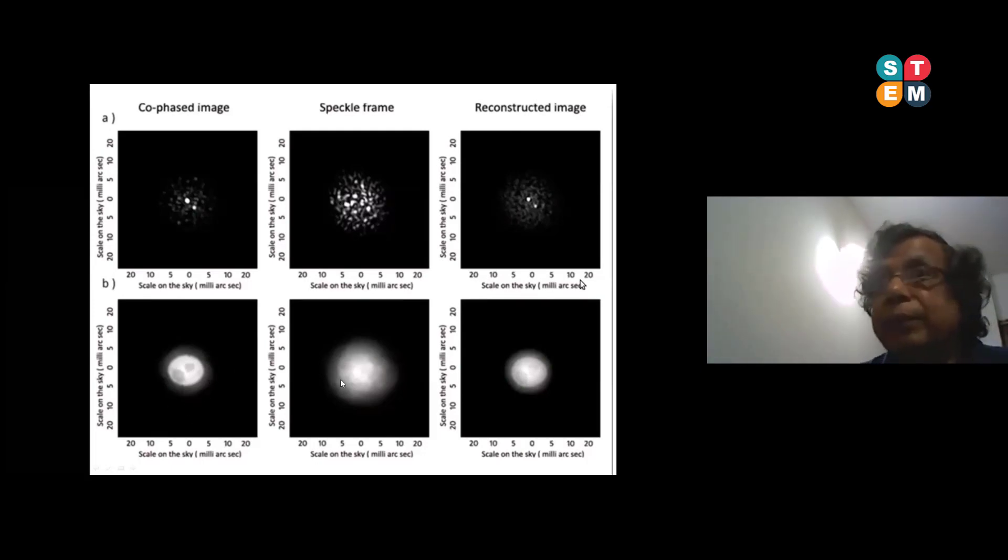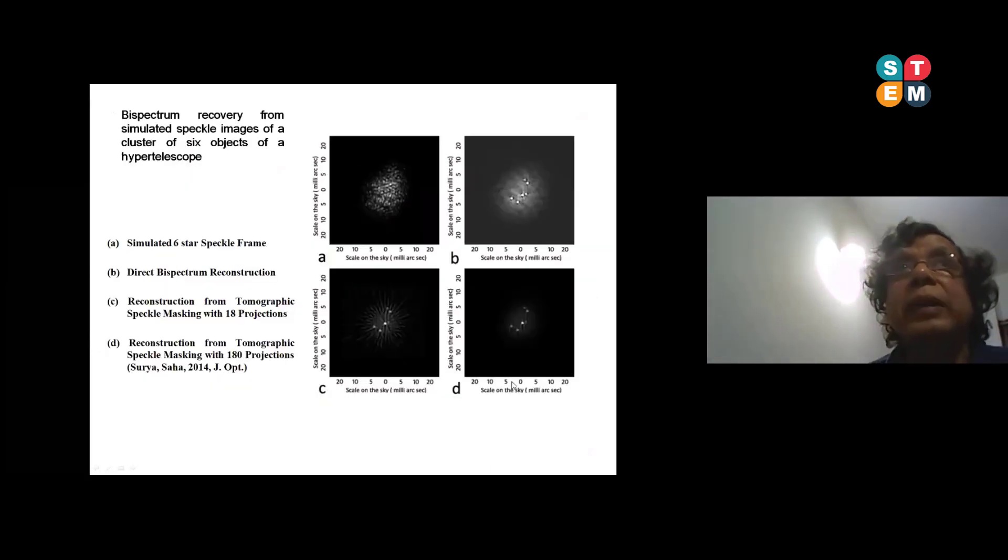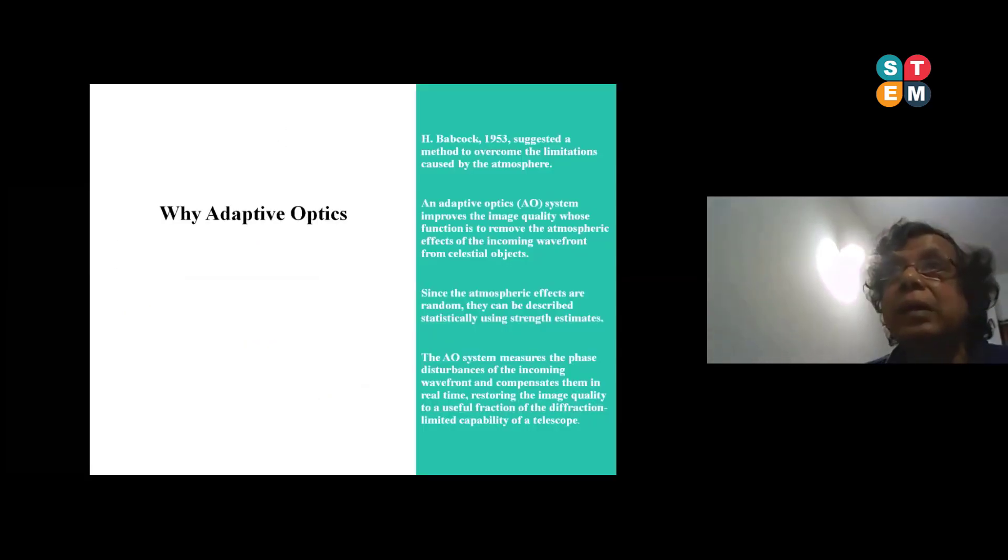We found out that pattern is coming almost the same. These are all simulated ones. Then we took six star speckle frame. We found out this is direct bi-spectrum, and this is tomographic image. We found out that tomographic speckle masking is giving a similar result.